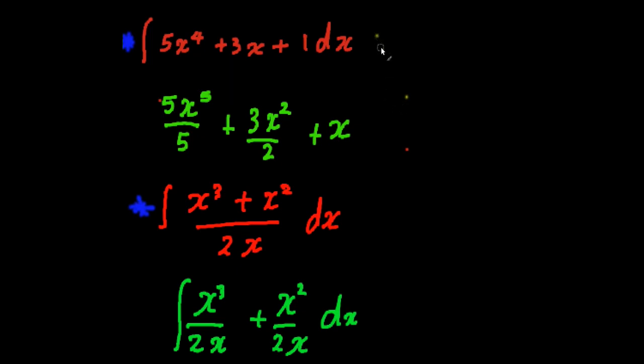Starting off with the first one, this is a fairly easy question with standard integration. So if I have x to the four, for example, simply add one over here and then divide by the same number. Same thing with the 3x becomes x squared and then divide by two. And then of course you have the plus x.